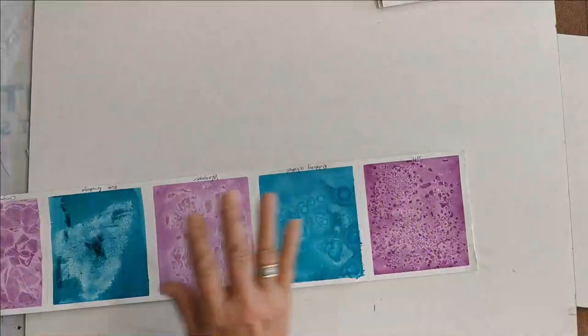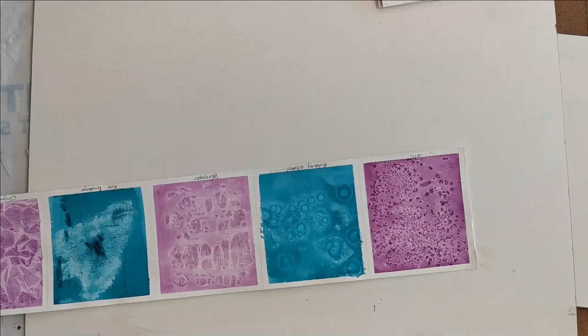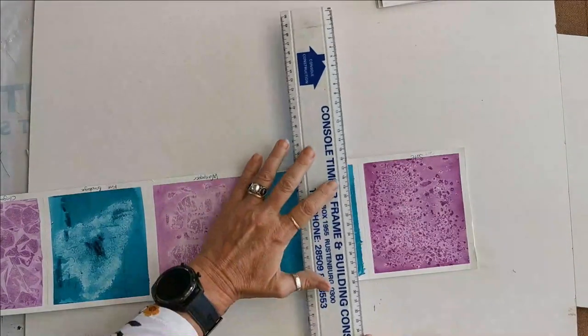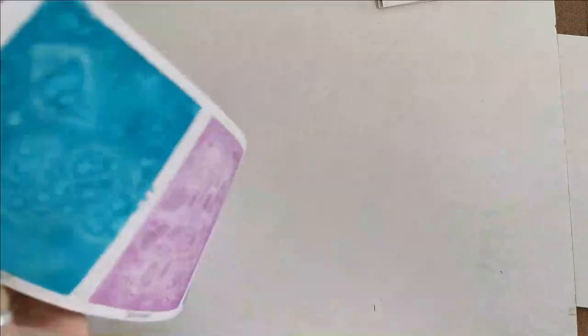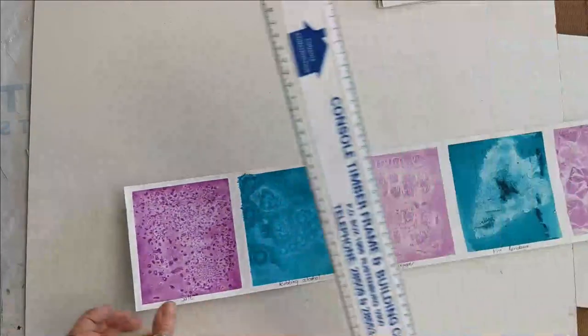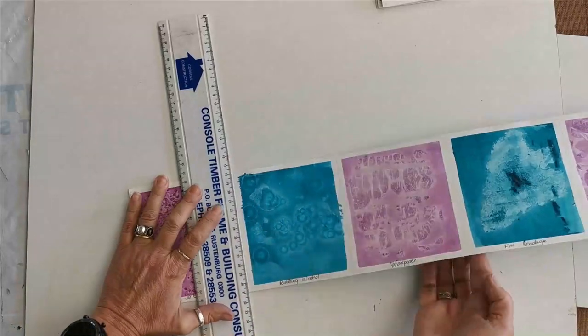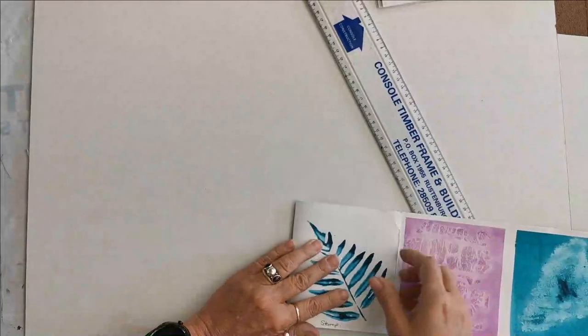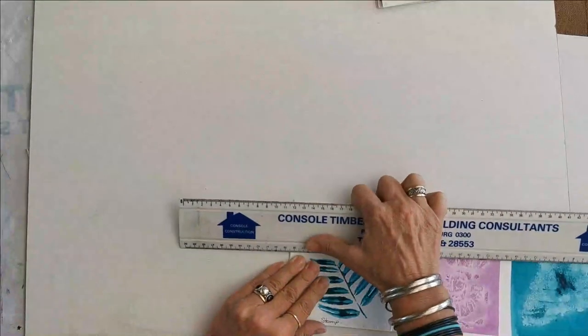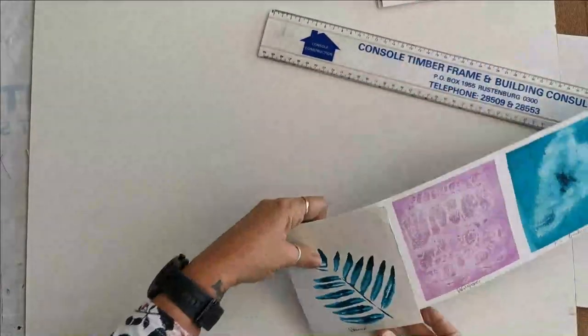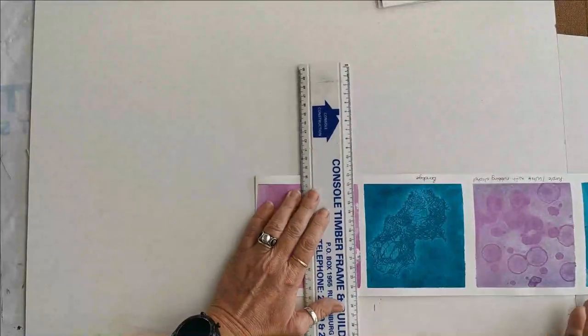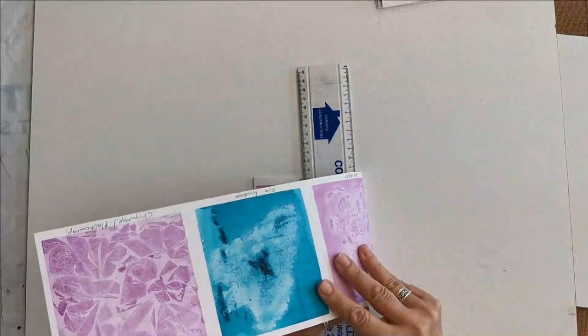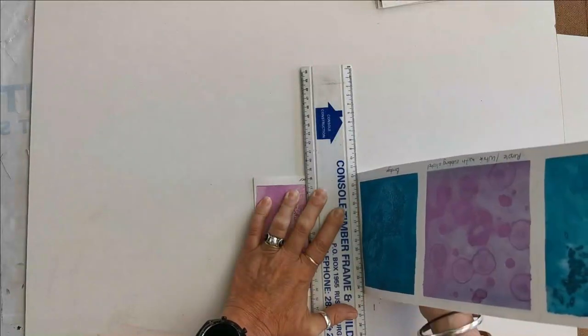So what you're going to do now, you're going to get yourself a ruler. You're going to decide which one of these are in front. It doesn't really matter. Let's start with the stamp. So what I'm going to do is I've made slight pencil marks there just to see where it goes. So what I'm going to do is I'm going to just make sure I flatten that for myself. Then I'm going to go to the other side.